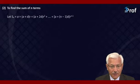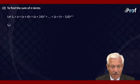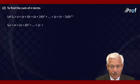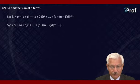Multiplying both sides by r, we get S_n times r equal to a·r plus (a + d)r² plus so on, plus (a + (n−2)d)·r^(n−1) plus (a + (n−1)d)·r^n.